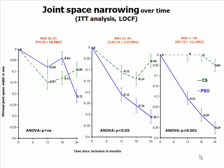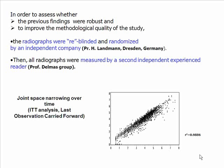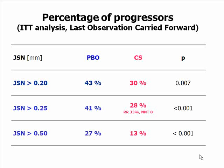Interestingly, this effect was mostly driven by patients with a high BMI. The substance was not really effective in normally-weighted people, but highly effective in those with intermediate to high BMI by European standards, with the highest effectiveness in those with the highest BMI. These radiological data are robust, as they were re-blinded and evaluated by two independent assessors from Germany and France, with high inter-center correlation. In this group, a 33% risk reduction in joint space narrowing was achieved, corresponding to a number needed to treat of 8.